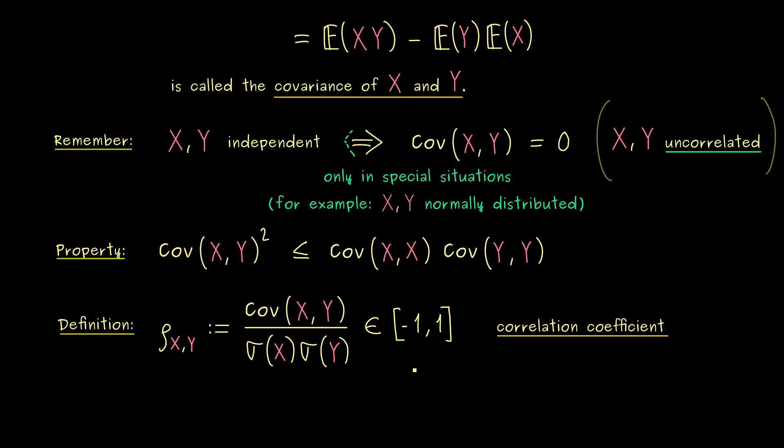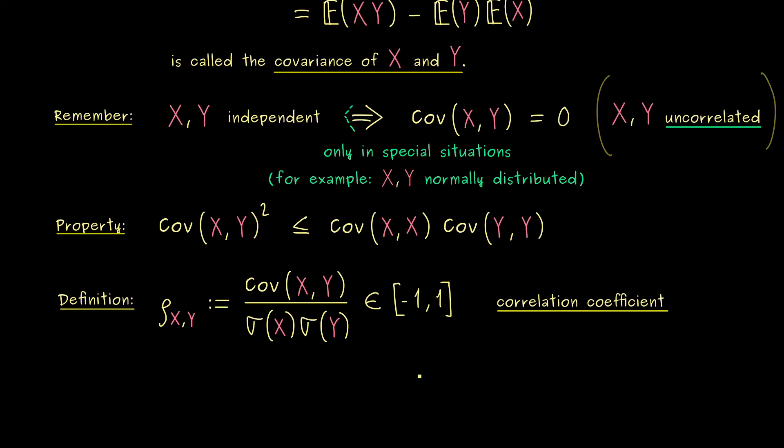On the other hand, being close to minus or plus 1 means they are very far off of being independent, so they are very correlated. However, this is just a quick overview. Later we will go more into the details about the correlation coefficient.